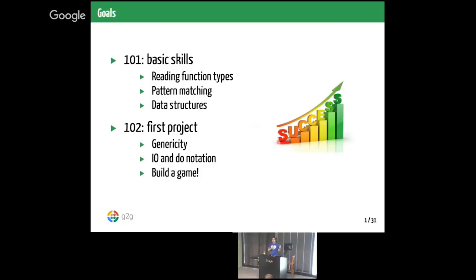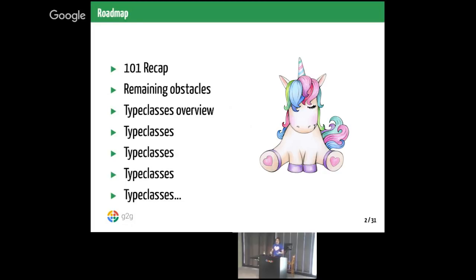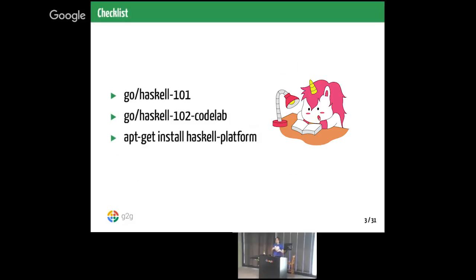Same as yesterday, I have roughly one hour of slides and an hour and a half of exercises. If you haven't done the setup for the exercises, we can do it during the break. Please do ask questions. So the roadmap for today: I'm going to start with a small 101 recap just to make sure it's all fresh in your mind, then go through remaining obstacles — problems you might have faced as beginners — and the things we're going to try to solve today. You will need to download the codelab and install the compiler, but we can do that during the break.